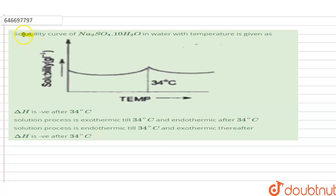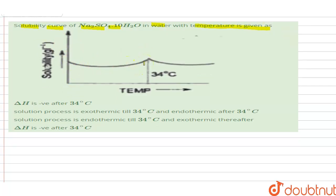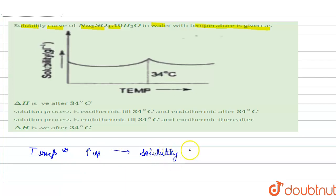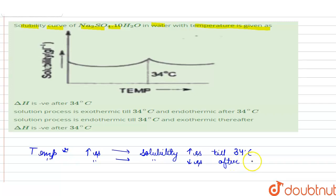The question is about the solubility curve of Na₂SO₄·10H₂O in water with temperature. If we observe the curve, we see that the solubility first increases up to 34°C and then decreases after 34°C. Solubility increases till 34 degrees Celsius, and then when the temperature increases further, the solubility decreases after 34 degrees Celsius.